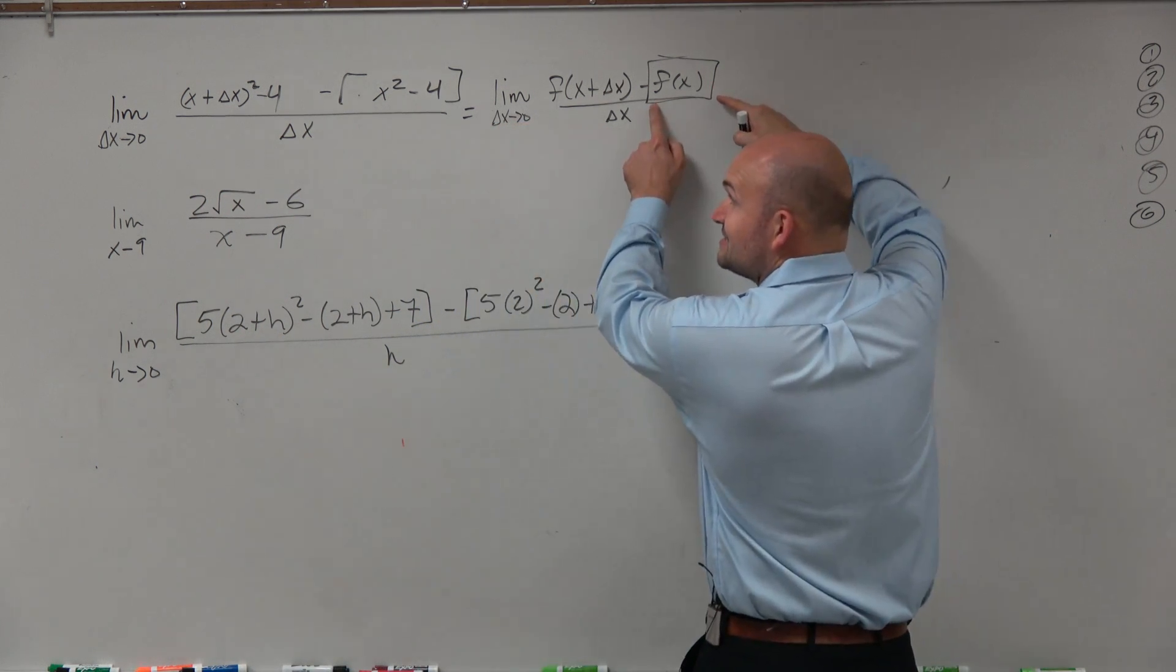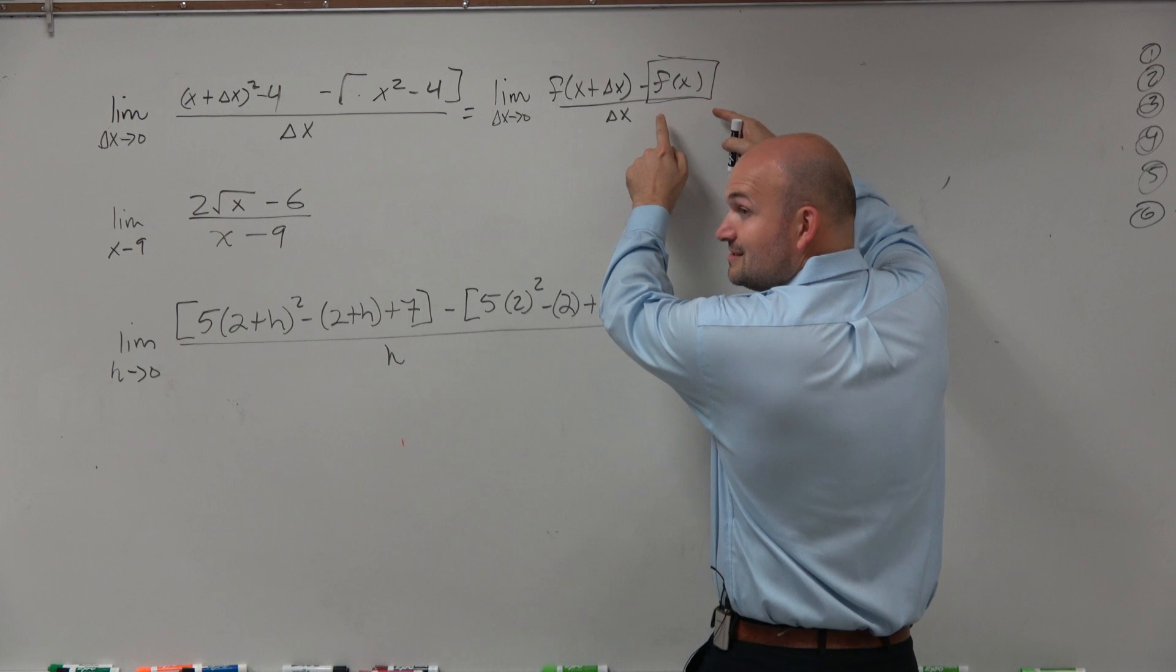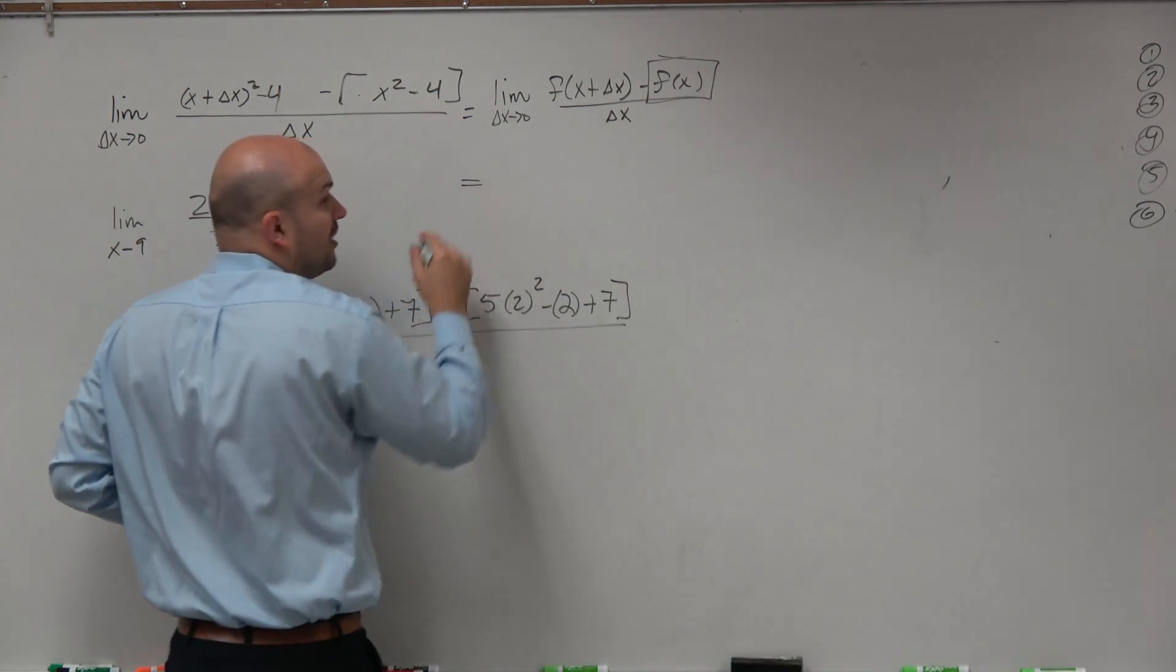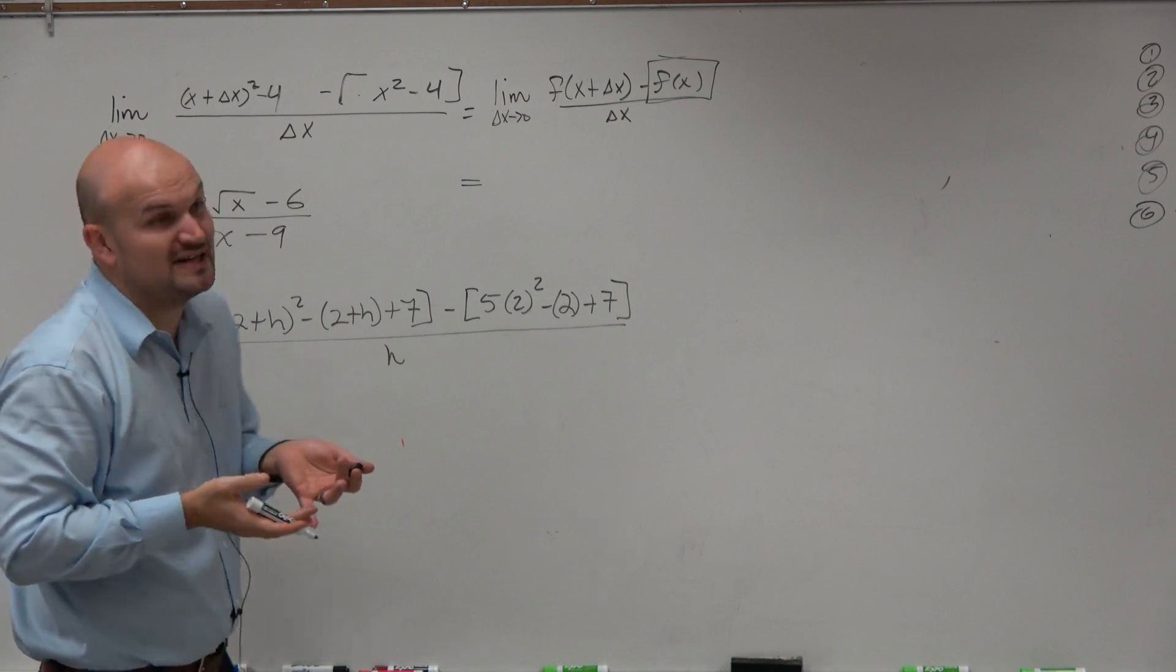Here's the f of x, guys. It's right in front of us, right? Yes? F of x is right there, x squared minus 4. So therefore, all we're really doing is taking the derivative of x squared minus 4. That's what the answer is.